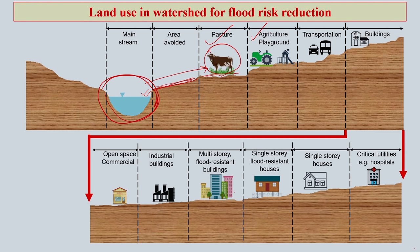After pasture, we can have agriculture area as well as playgrounds for the community. This is the area where you also need to assure the supply of water, and at the same time be sure that frequent intrusion of water from the river or sea line will not come inside the agricultural land.